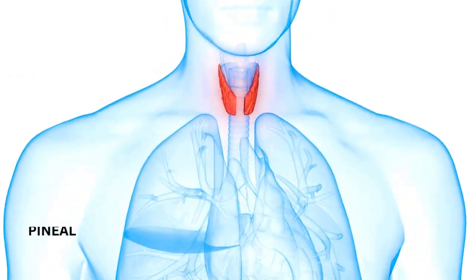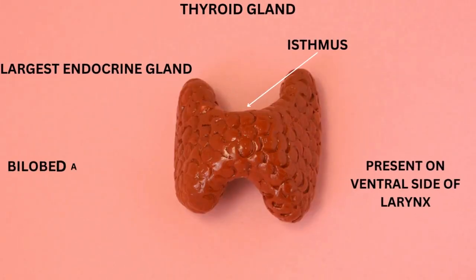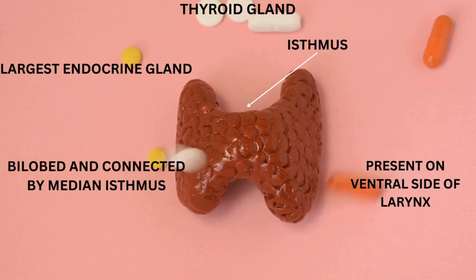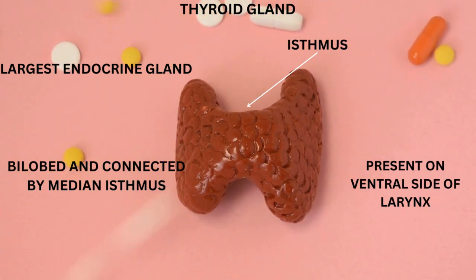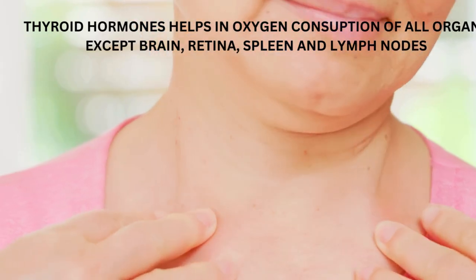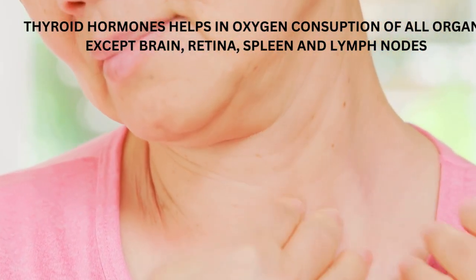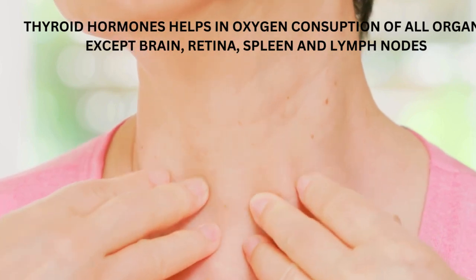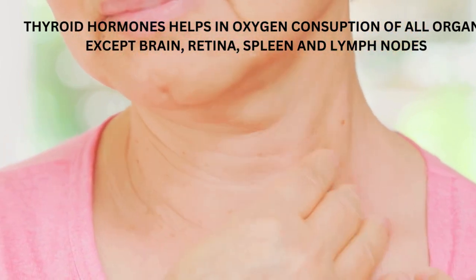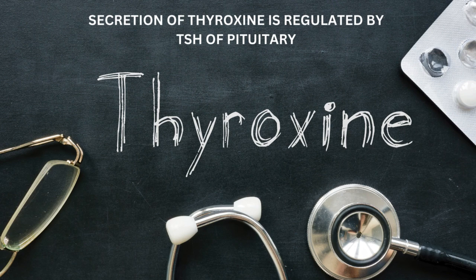The thyroid gland is an important gland present at the ventral side of your larynx. It is the largest endocrine gland and is a bilobed organ connected by the median isthmus. This is the structure of the thyroid gland. Thyroid hormones help in oxygen consumption of all organs except the brain, retina, and similar tissues.